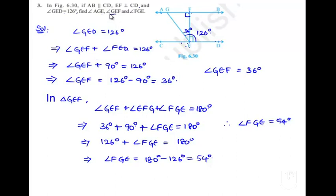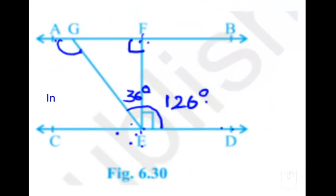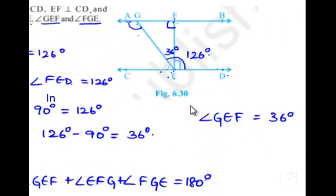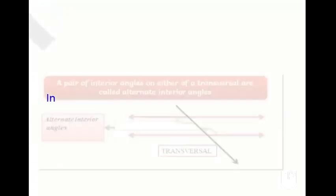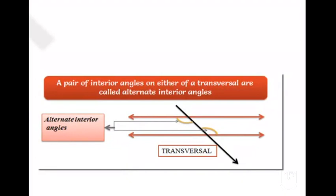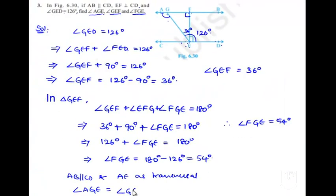Here we got two values: angle GEF and angle FGE. Now we have to find angle AGE. It is given that AB is parallel to CD, and if we consider EG as a transversal, then angle AGE and angle GED are alternate interior angles. We know that when lines are parallel, their alternate interior angles are equal. Therefore, angle AGE is equal to angle GED, which equals 126 degrees.